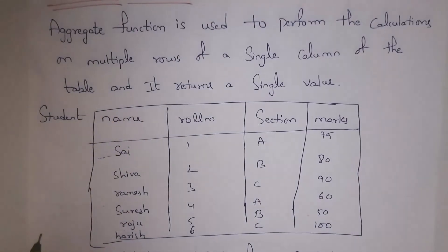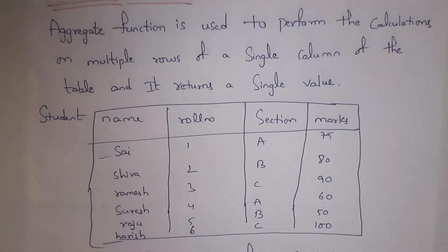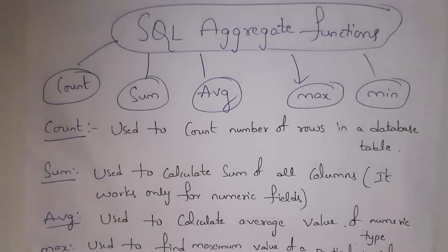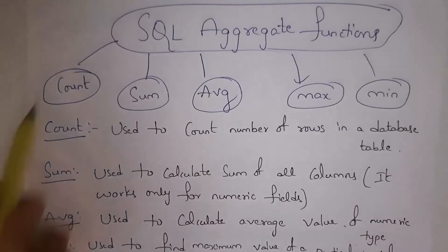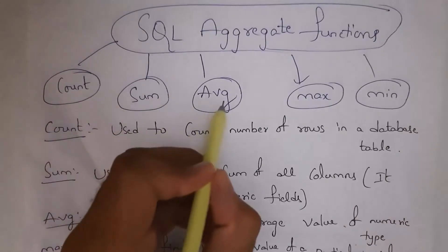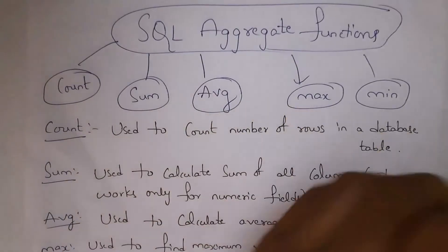Aggregate function returns a single value as output. I will give an example so that you can clearly understand this definition. In total there are five aggregate functions: COUNT, SUM, AVERAGE, MAX, and MIN.